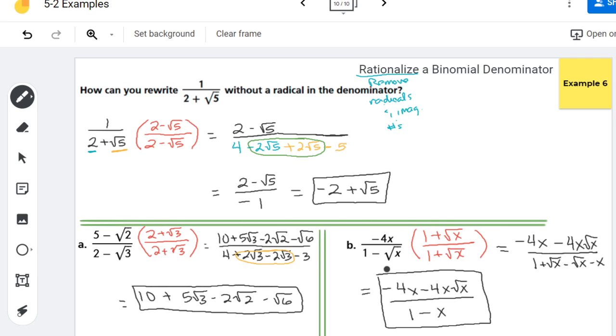So there we have it. That is how to rationalize a binomial denominator. Until next time.